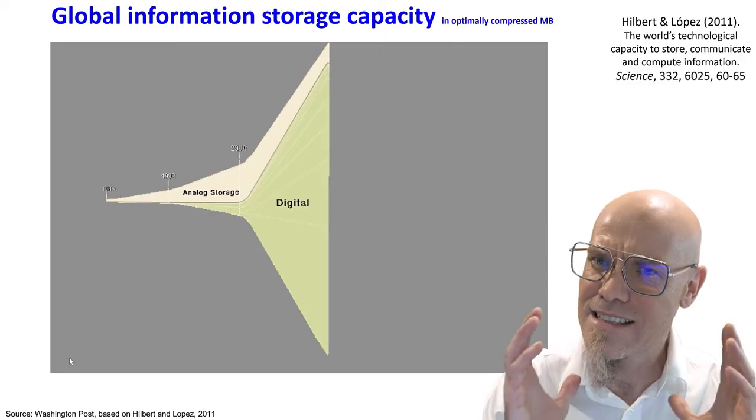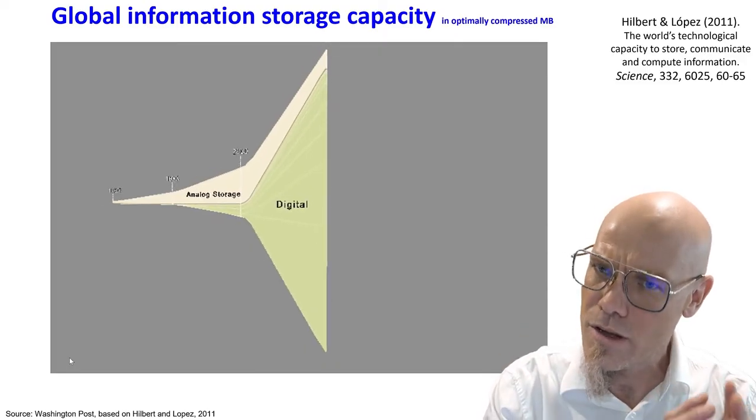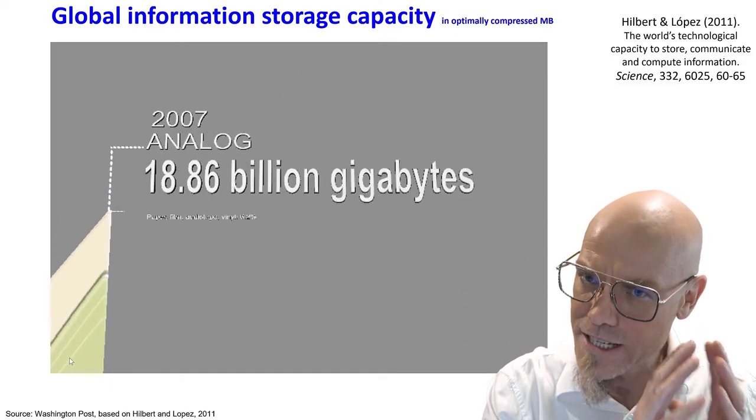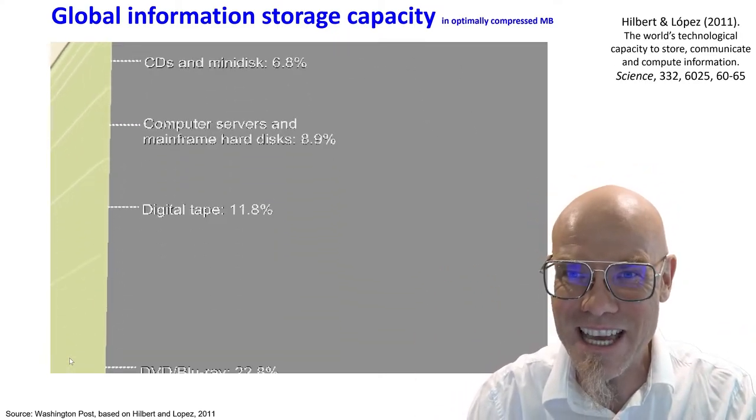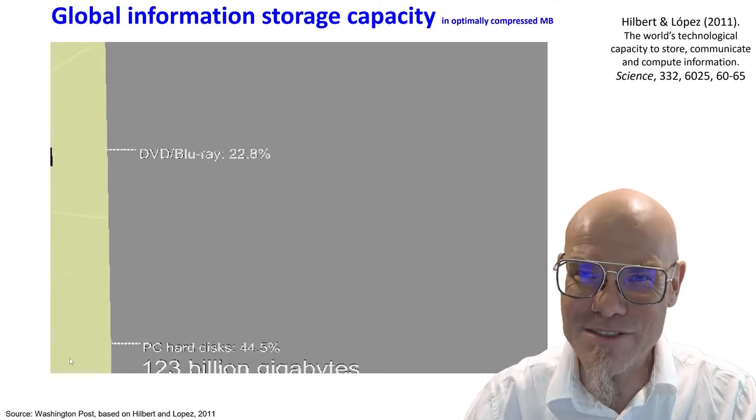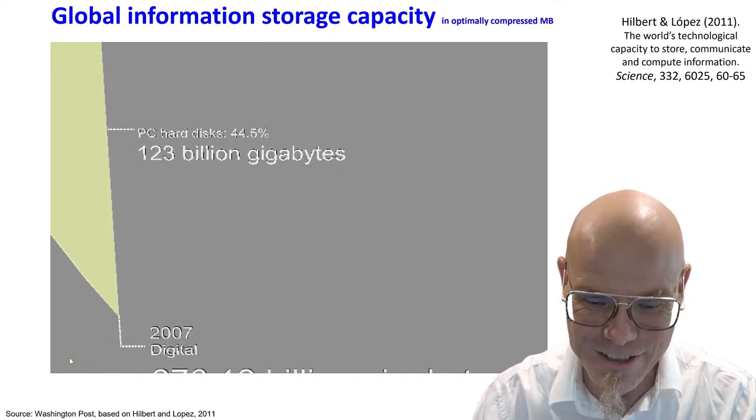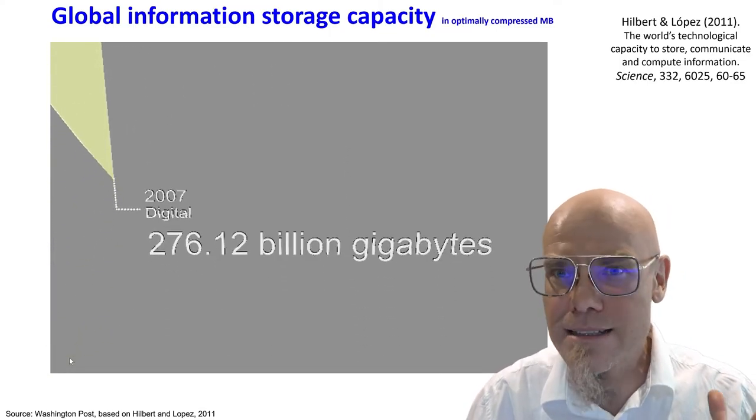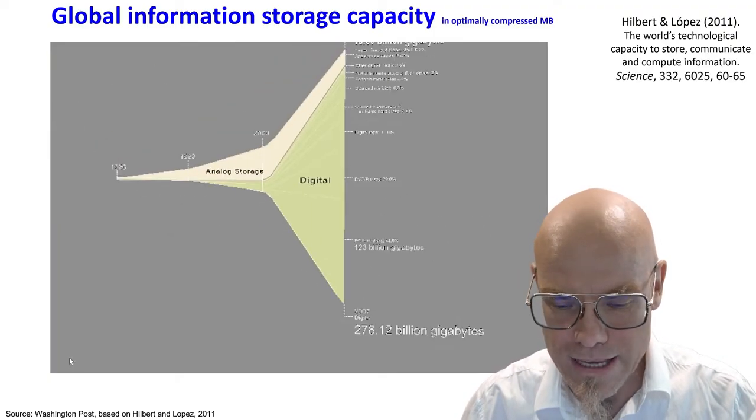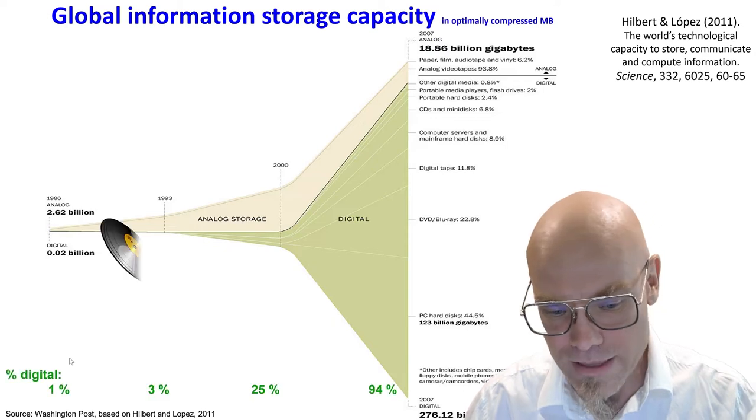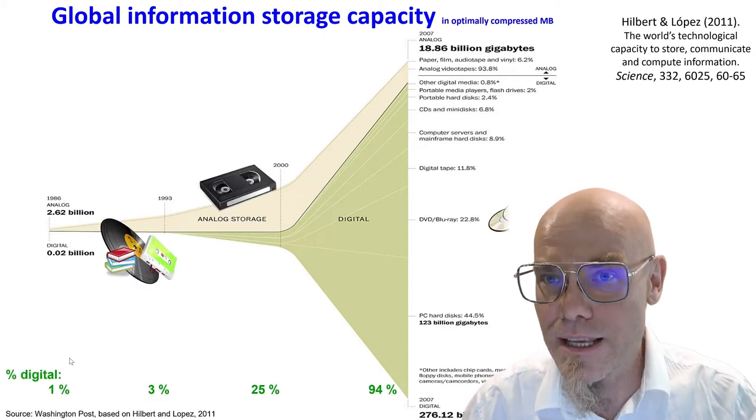After the year 2000, it started to explode. It doesn't mean that there's less analog information in the world. There's still a lot of technologically stored information on paper, and the paperless office never came to become a reality. But the vast majority of information nowadays is just digital has grown so much. And that really happened in a blink of an eye.